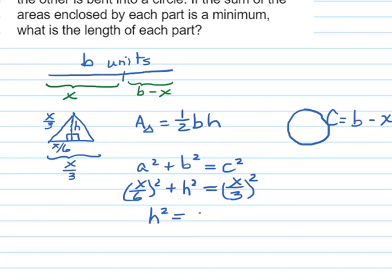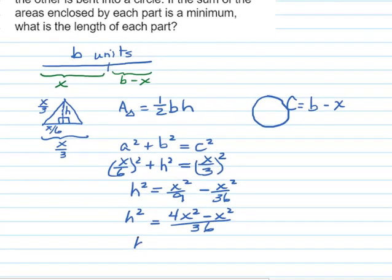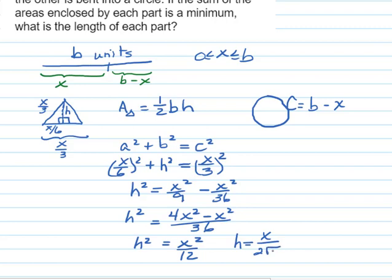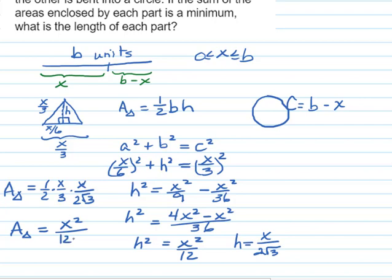So H squared equals X squared over nine minus X squared over 36. Getting a common denominator, we have four X squared minus X squared over 36 equals H squared. So H squared is three X squared over 36, which reduces to X squared over 12. Since height is a positive number, the height is the positive square root of X squared over 12, which is X over two root three. So the area of the triangle equals one half times the base X over three times the height X over two root three, giving us X squared over 12 root three.